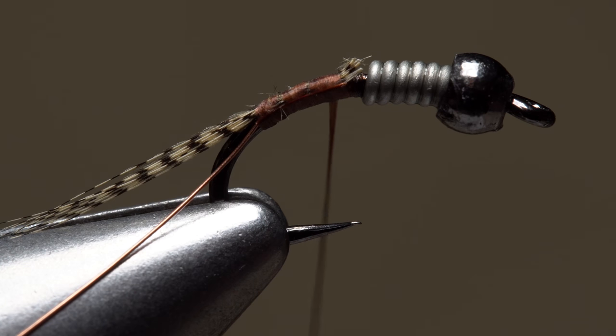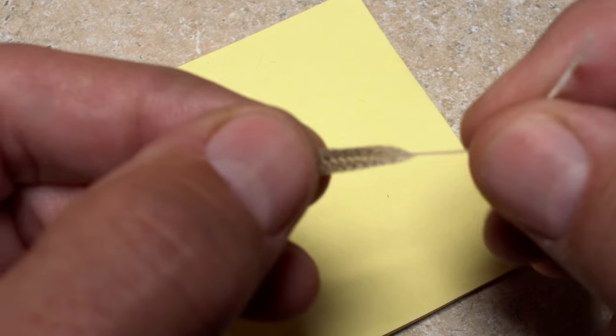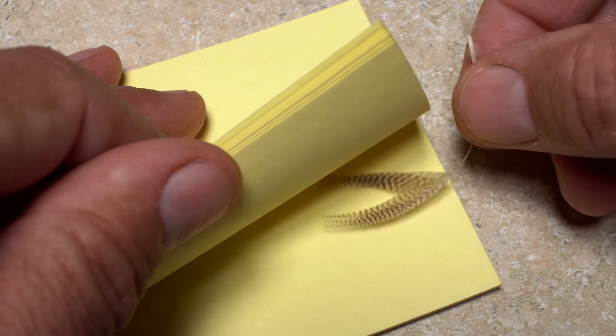There, snip the excess fibers off close. Pick up the remaining part of the duck feather and tuck it away for safe keeping.